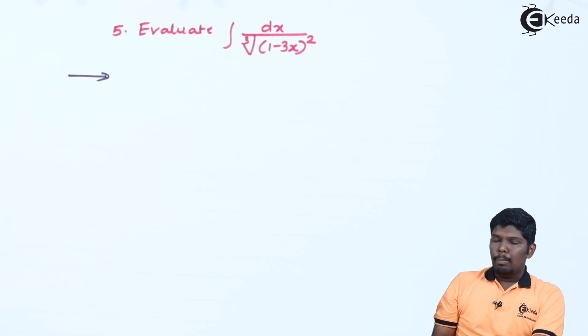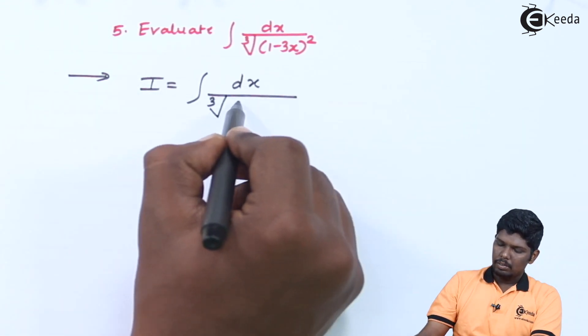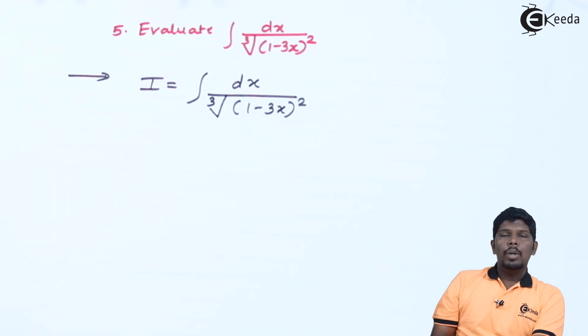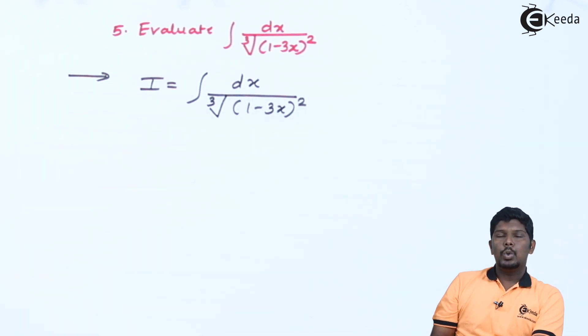Evaluate integral dx upon cube root of (1-3x)^2. Now in this case I can compare this function with x raise to n. But before that I need to convert or do some simplification steps so that I can compare it with x raise to n.